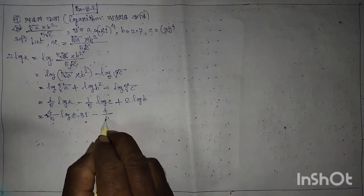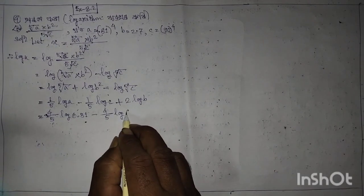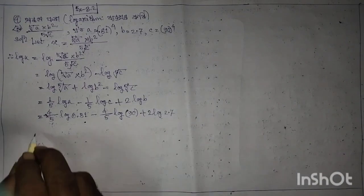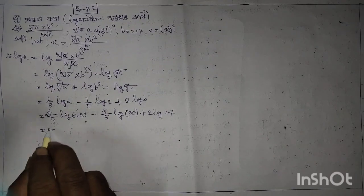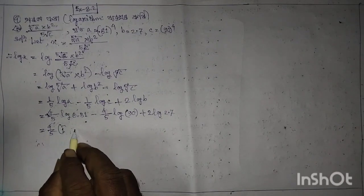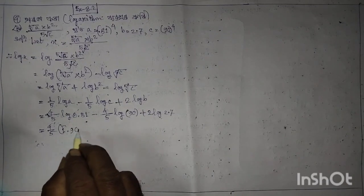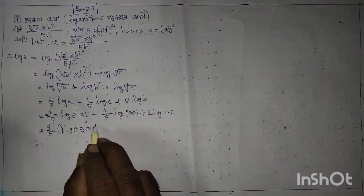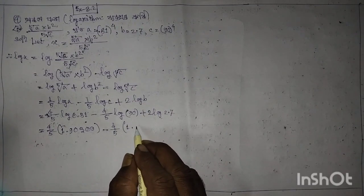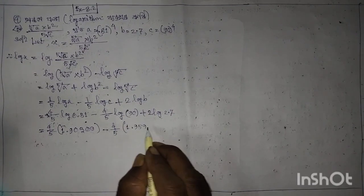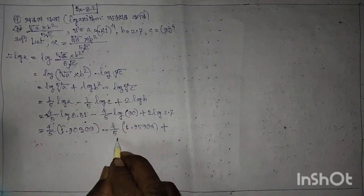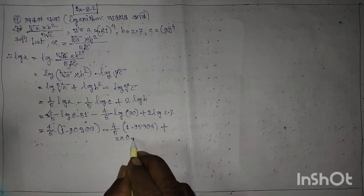Minus 4 by 5, log 90, plus log 2.7. 0, equal to 4 by 5, 1 minus 0.90309, minus 4 by 5, equal to 1.95904 plus 2 into 0.43.